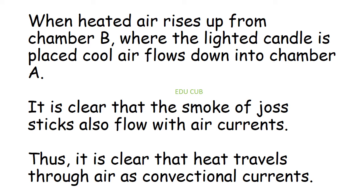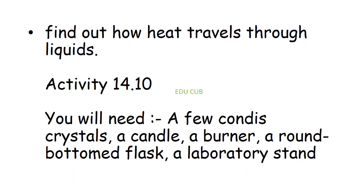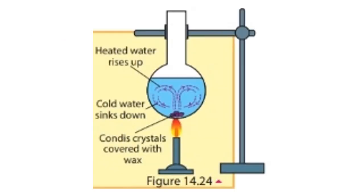In the next activity, you have to find out how heat travels through liquid. You will need a few potassium permanganate crystals, a candle burner, a round-bottom flask, and a laboratory stand. Place some potassium permanganate crystals at the bottom of the flask and cover them with wax. Pour water into the flask and heat it. Observe what happens. It can be observed that purple color rises up as currents from the crystals in the water and sinks down near the wall of the flask.